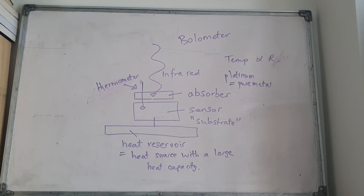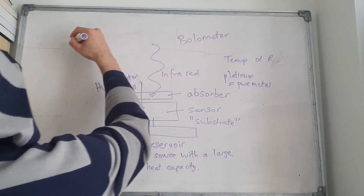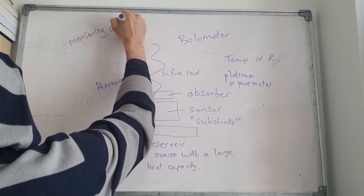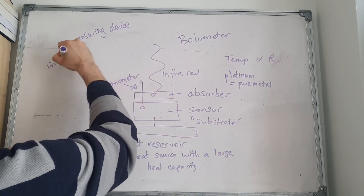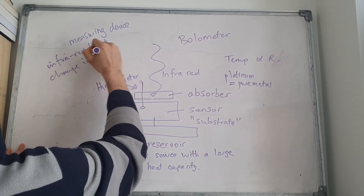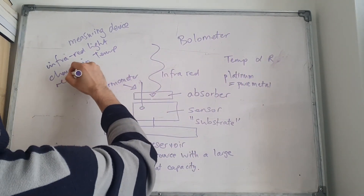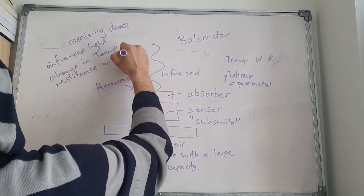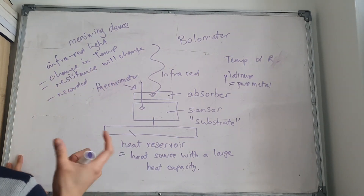So a bolometer is a measuring device: when incident infrared light hits the absorber, there's a change in temperature, which causes a change in resistance. This change in resistance is then recorded as a voltage difference — a potential difference.